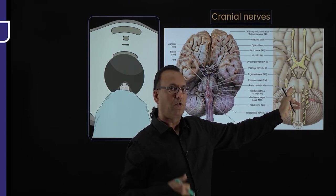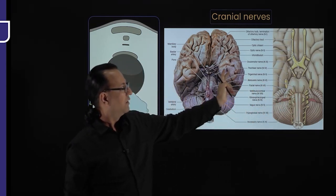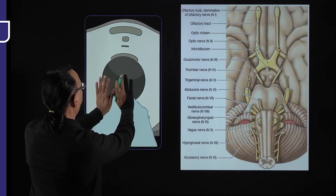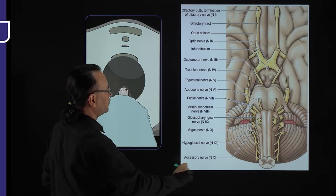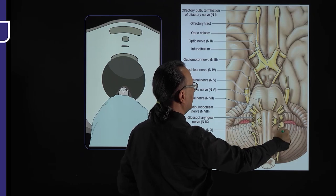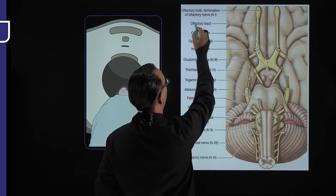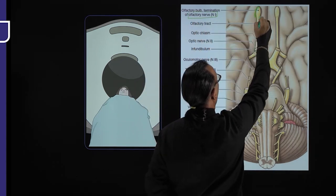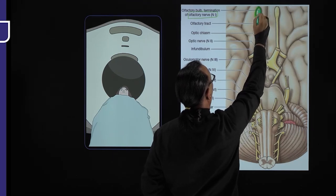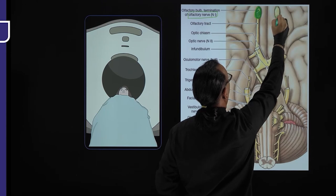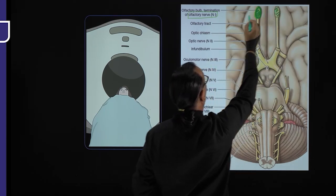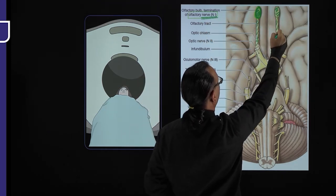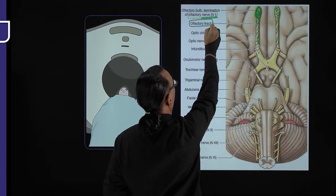Let us magnify the schematic diagram and talk about the cranial nerves with some orientation before observing them in the actual brain. In this antero-inferior view, the first cranial nerve, the olfactory nerve, arises from the roof of the nasal cavity and synapses in the olfactory bulb. From there, the olfactory tract runs toward the cerebrum.